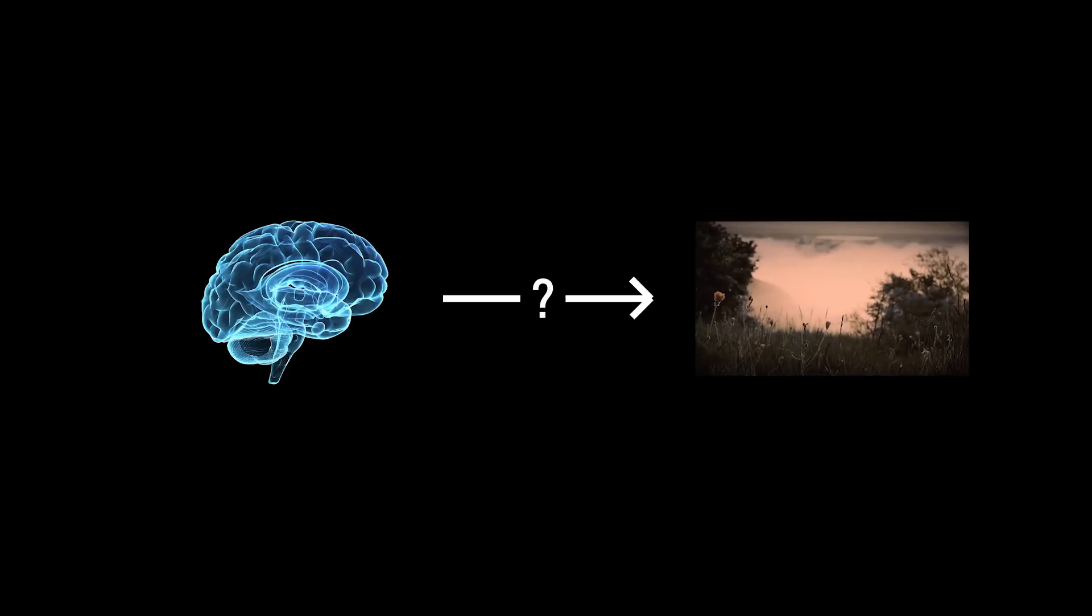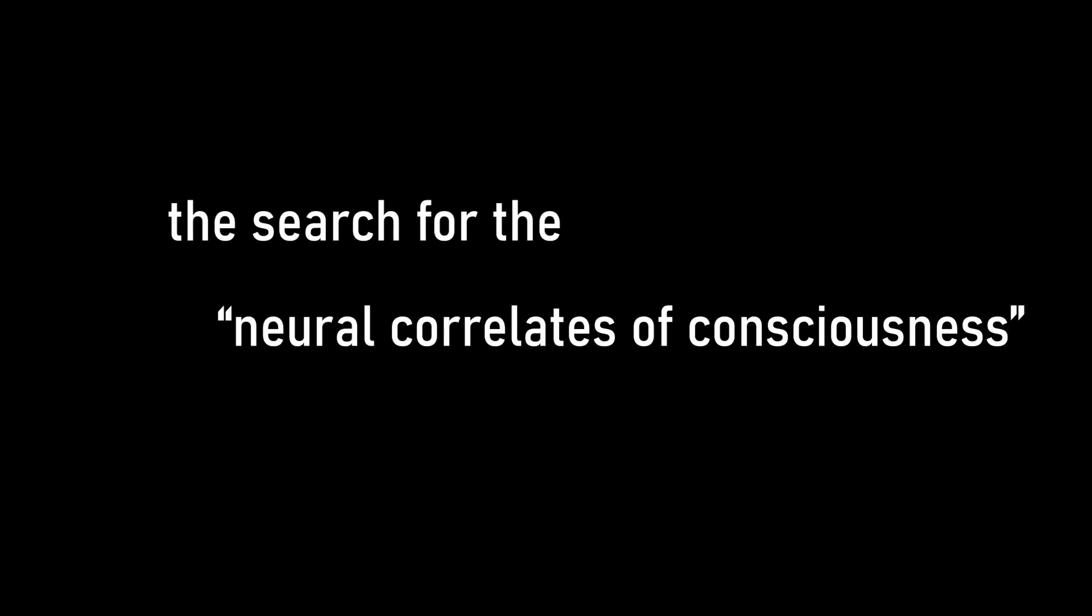Of course, our science is not yet developed enough to fully understand how the human brain works, and it's the fact that we don't know why certain third-person brain processes correlate to certain first-person conscious experiences is known as the explanatory gap. How come this is what happens in the brain when you feel pain? How come this is what happens when you see red? Is my red even the same as your red? The process of science trying to answer these questions is called the search for the neural correlates of consciousness, or NCCs.